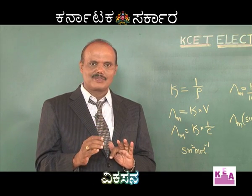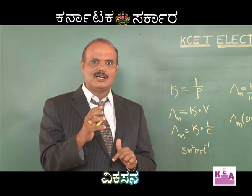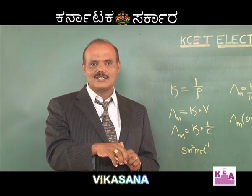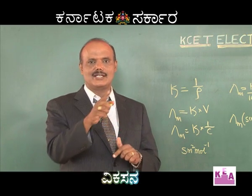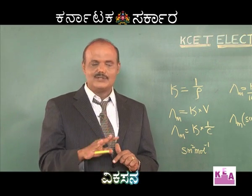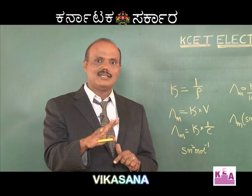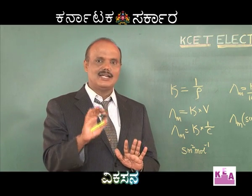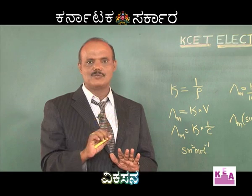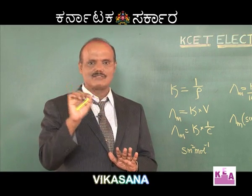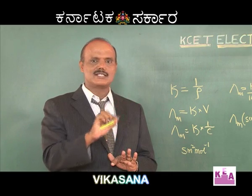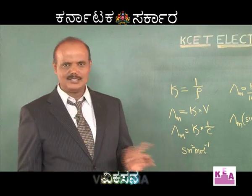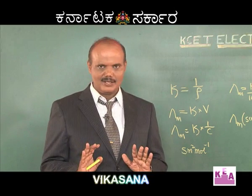To solve these two problems with the Wheatstone bridge: first, to connect the solution, we design a cell called a conductivity cell — an electrolytic cell through which connection is given to the Wheatstone bridge. Second, instead of DC, we pass AC using an oscillator, so we can obtain the conductivity of the electrolytic solution using the Wheatstone bridge principle: R1/R2 = R3/R4. From this, the unknown resistance of the electrolytic solution can be calculated, and from that, the conductivity.